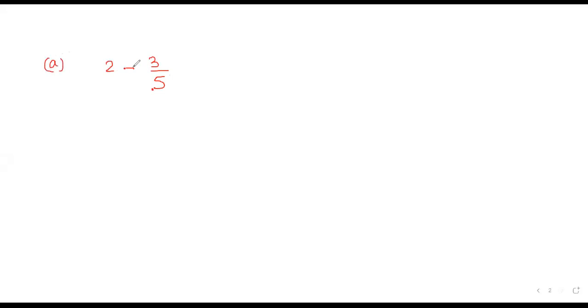First of all, we have to make denominators equal. So we can multiply by 5 and divide by 5 to 2, so that it becomes 2 into 5 divided by 5 minus 3 by 5. Now denominators are same. So we write 5 here and then 10 minus 3, which is 7 upon 5.